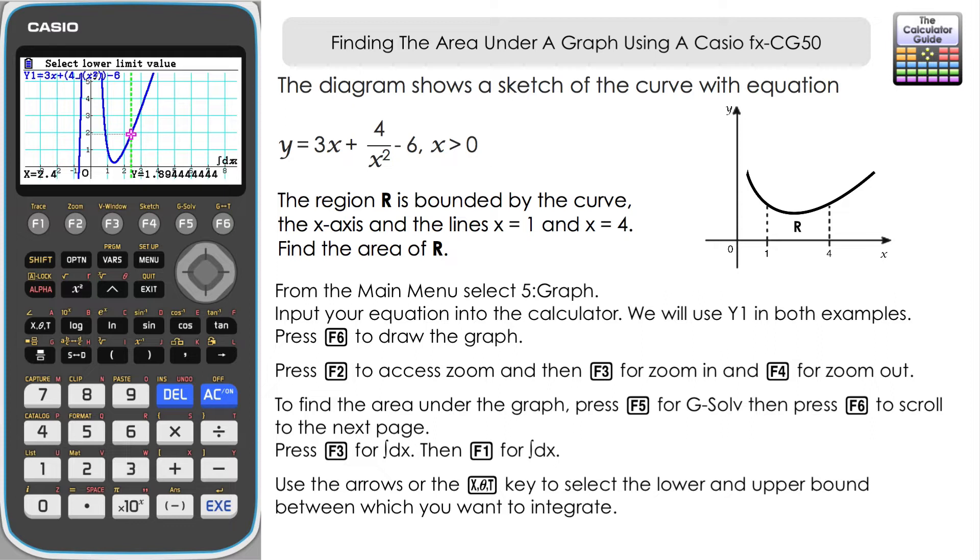And then it'll ask us to select our lower limit. Now what you can do, you can use left and right to scroll along the graph to get to the x-coordinate that you want as your lower limit if you choose to. However, if you already know it and want to get there quickly, what you can do is just press the x-theta-t button here and that will prompt you for your lower bound. So in this case it is 1. So we've got 1 in as our lower bound. Select upper limit value, well let's just press x-theta-t again and input our upper bound which is 4.